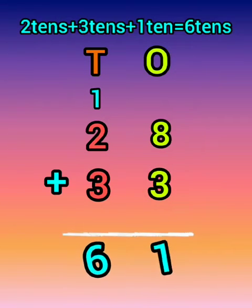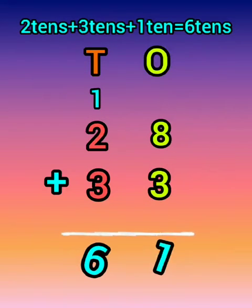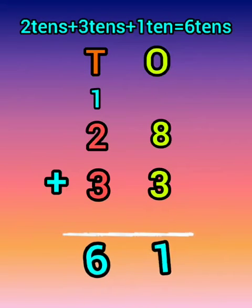Now add tens: 2 tens plus 3 tens plus 1 ten is equal to 6 tens. Don't forget to add the 1 ten you carried.